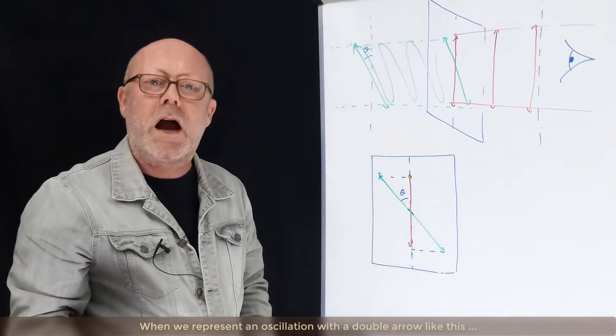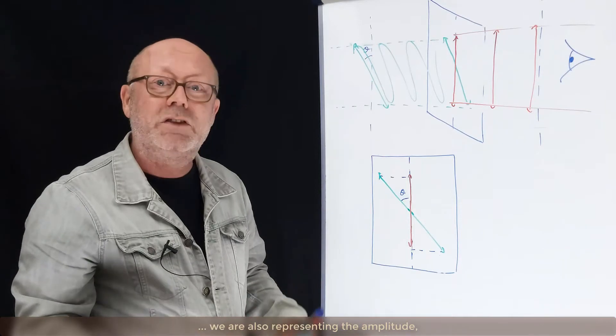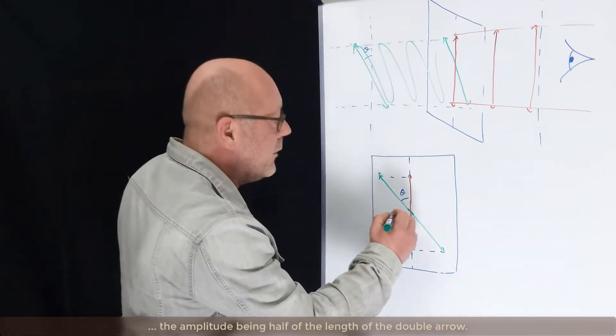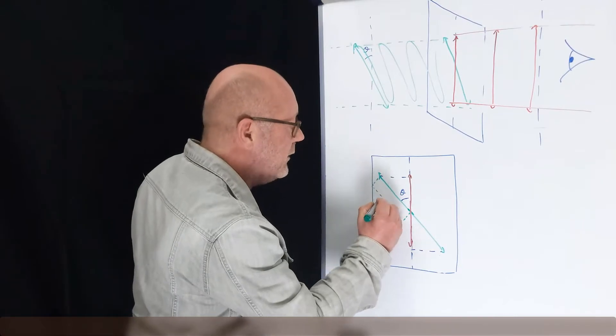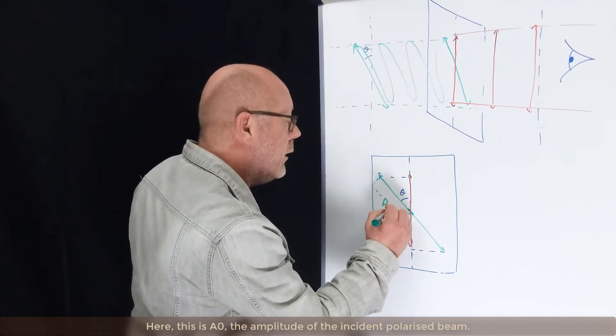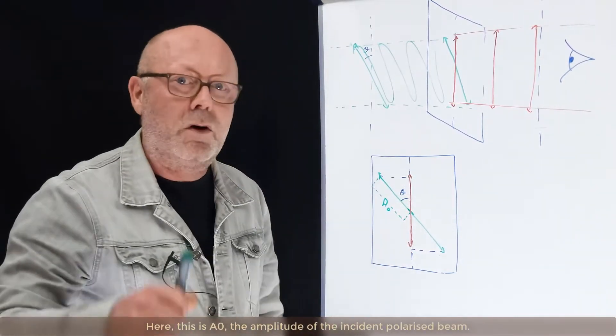When we represent a double arrow like this, we are also representing the amplitude. The amplitude being the length of half of it. So here, this is A0, the amplitude of the incident polarized beam.